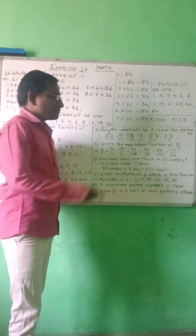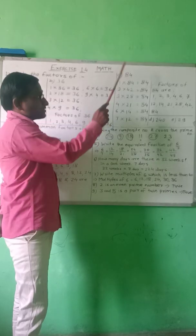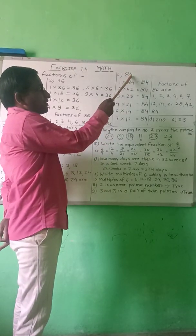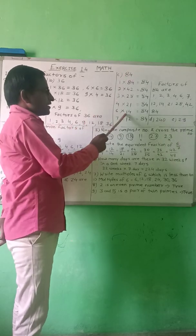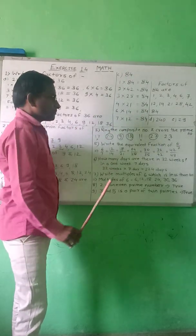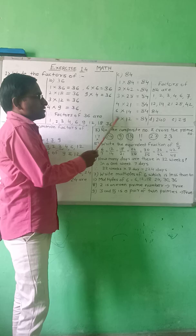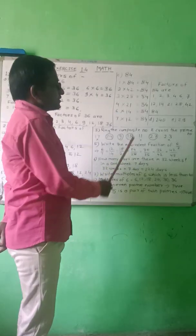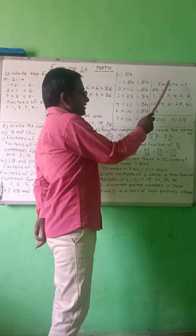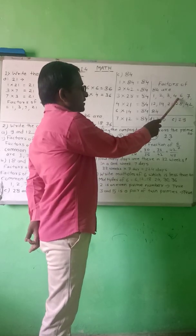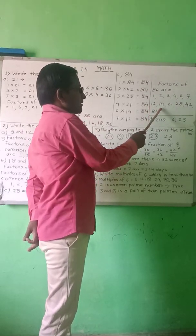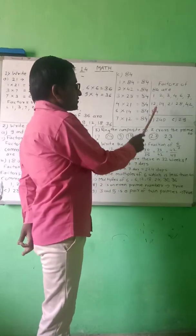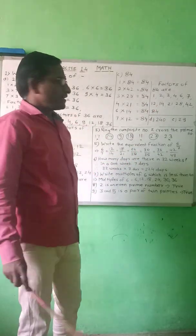6 divides 84: 6 times 14 is 84. Next, 7: 7 times 12 is 84. Therefore, the factors of 84 are 1, 2, 3, 4, 6, 7, 12, 14, 21, 28, 42, and 84.